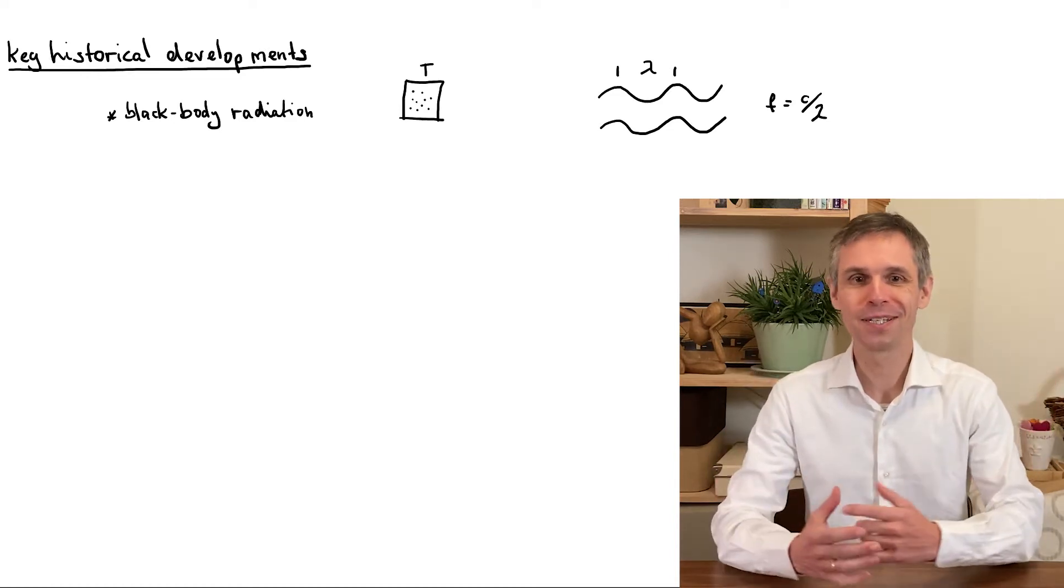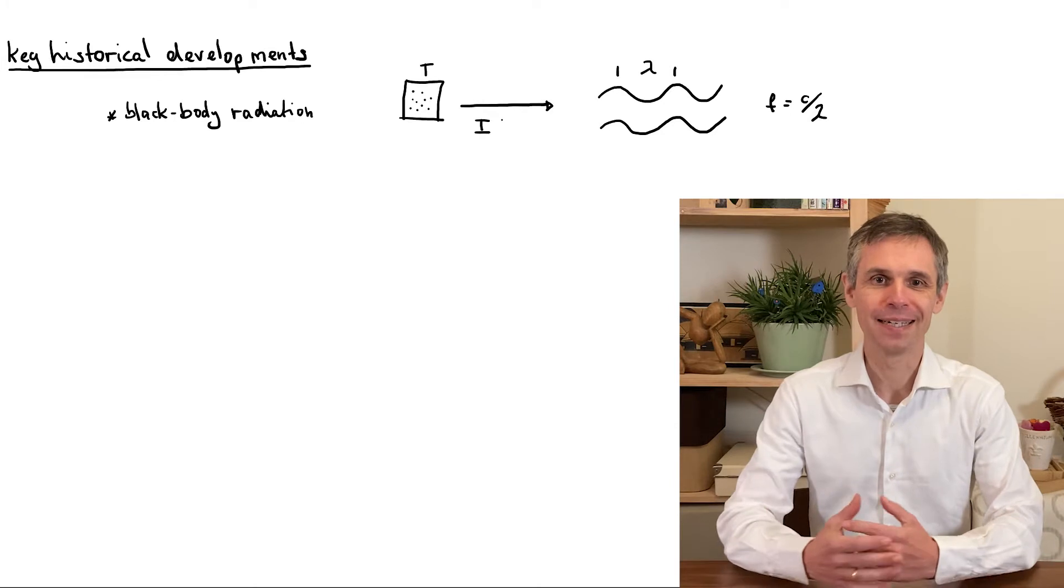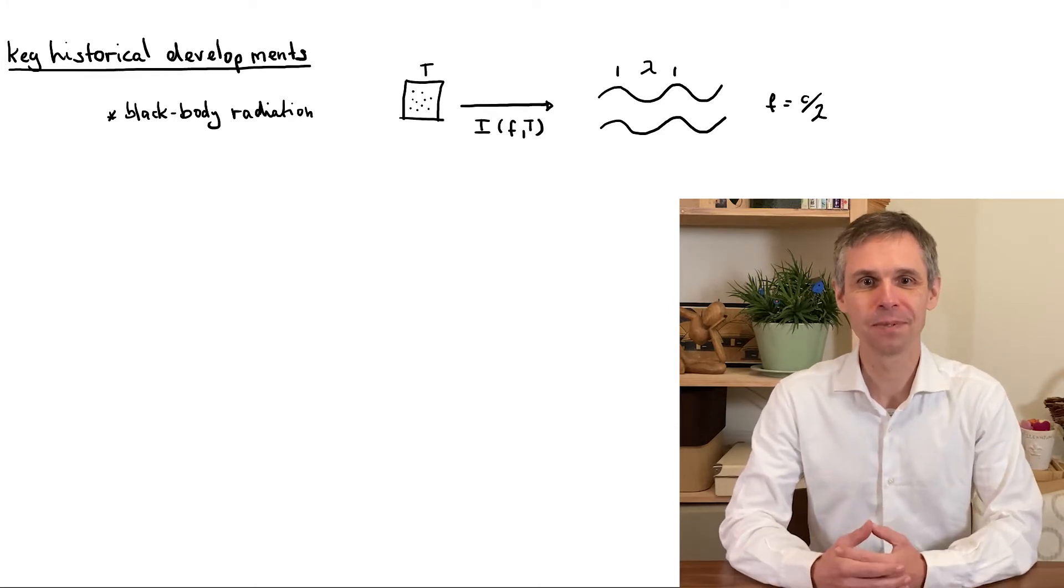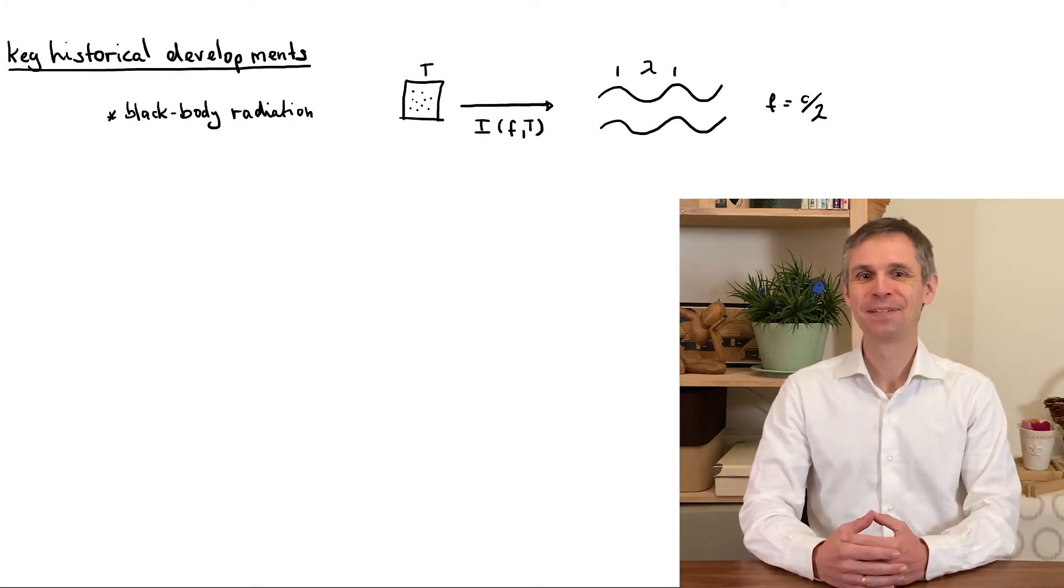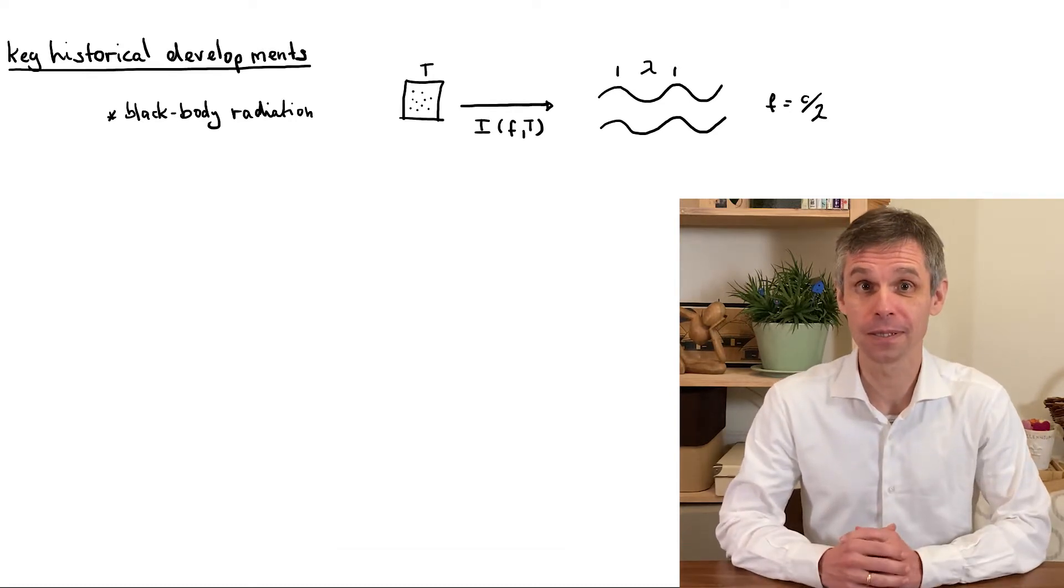Black bodies emit thermal radiations across all frequencies, but in a spectral analysis, different frequencies appear with different intensities, which moreover show a systematic dependence on the temperature of the body.